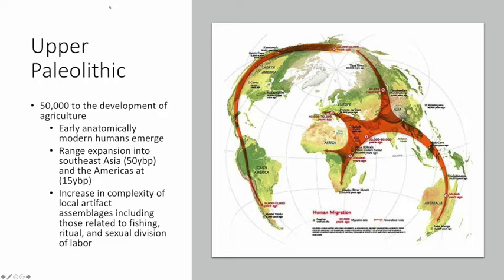Before 50,000 years ago, it becomes more difficult to find anatomically modern humans — there are more debates and controversies. The evidence becomes much more complex for whether human beings exist on earth and to what extent the fossils we find are related to us or indirectly in our evolutionary line. It is really this period of 50,000 years ago to the development of agriculture that we see the expansion of Homo sapiens throughout the world — a range expansion during the Upper Paleolithic that's very important to understand.